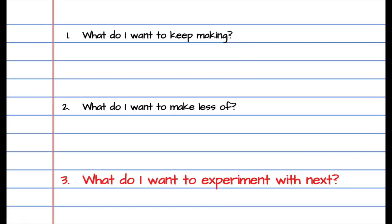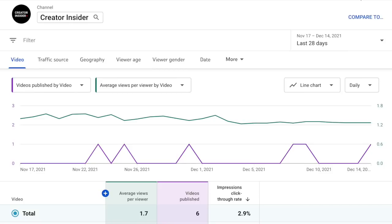Then maybe you have another note: what do I want to make next? Experimentation and trying new things is going to be key to long-term growth, especially if you've been on the platform for a while. So think back to what your audience is interested in that you want to experiment with. So far we have: what do I want to make more of, what do I want to make less of, and what do I want to try next? As a bonus tip, if you want to figure out how often you should upload, one useful piece of information is going to the advanced mode of YouTube analytics and comparing videos published and average views per viewer, to figure out if you're uploading way more than your audience is willing to watch.